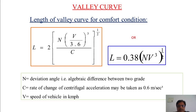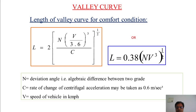Let us see how to calculate the length of the valley curve. For comfort conditions, L = 2[NV³/(3.6³ × C)]^(1/2), or simplified: L = 0.38 × (NV³)^(1/2), where N is the deviation angle (algebraic difference of the two grades), C is the rate of change of centrifugal acceleration taken as 0.6 m/s³, and V is the speed of the vehicle in km/h.